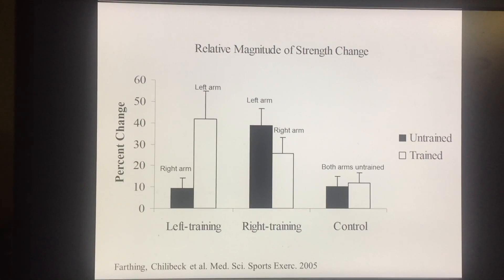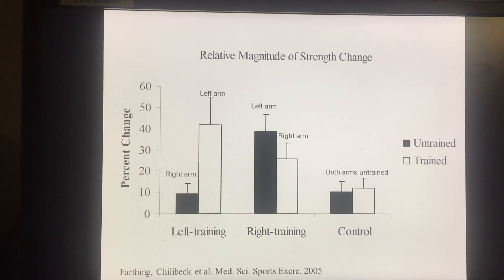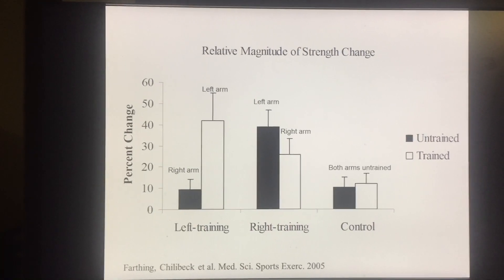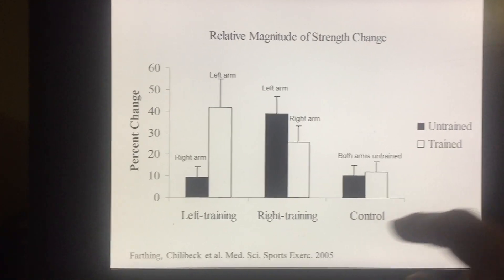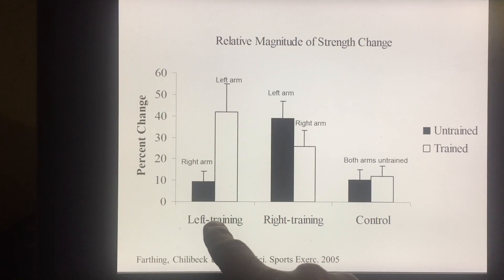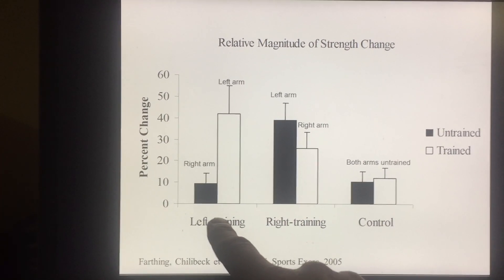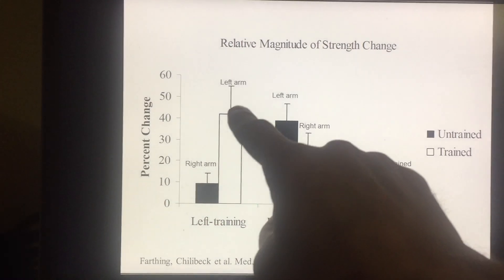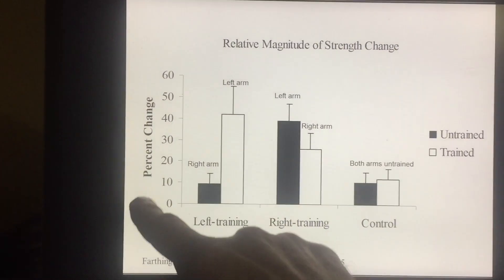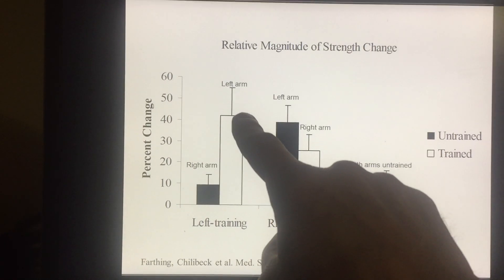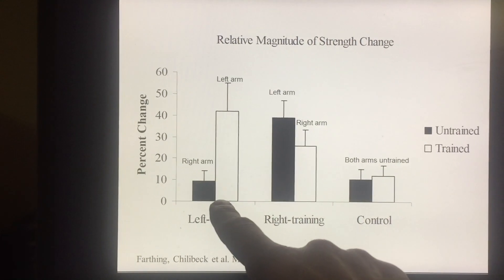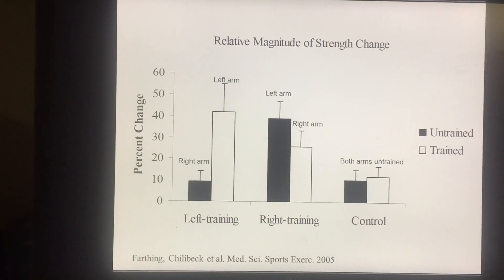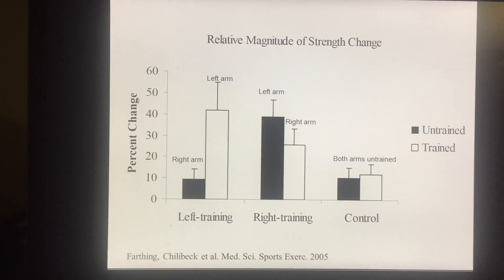This graph shows the changes in strength with the training program. Looking at the group that just trained their left arm, as you'd expect, their left arm strength went way up — this is the percent change in strength. The right arm strength hardly changed at all, or had a very small change.